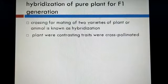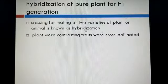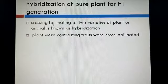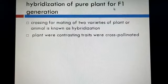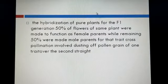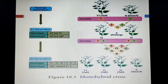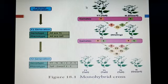The second step is hybridization. What is hybridization? Crossing or mating of two varieties of a plant or animal is known as hybridization. Here we will talk about plants — crossing of two varieties of plants is hybridization. Mendel performed hybridization of pure plants to get the F1 generation.